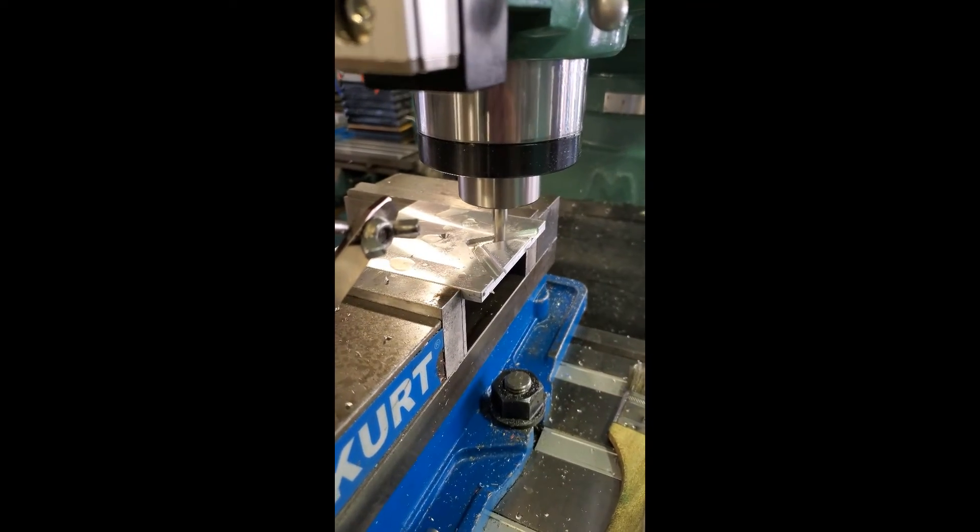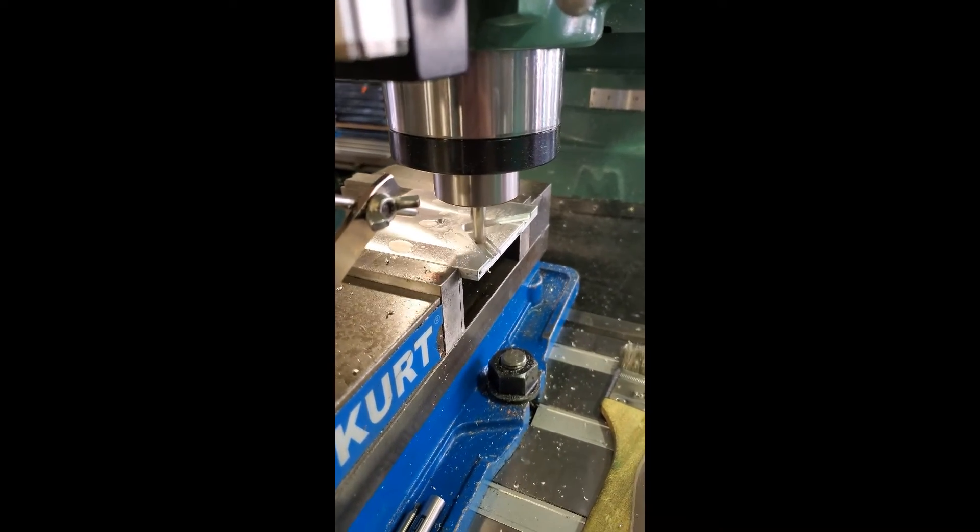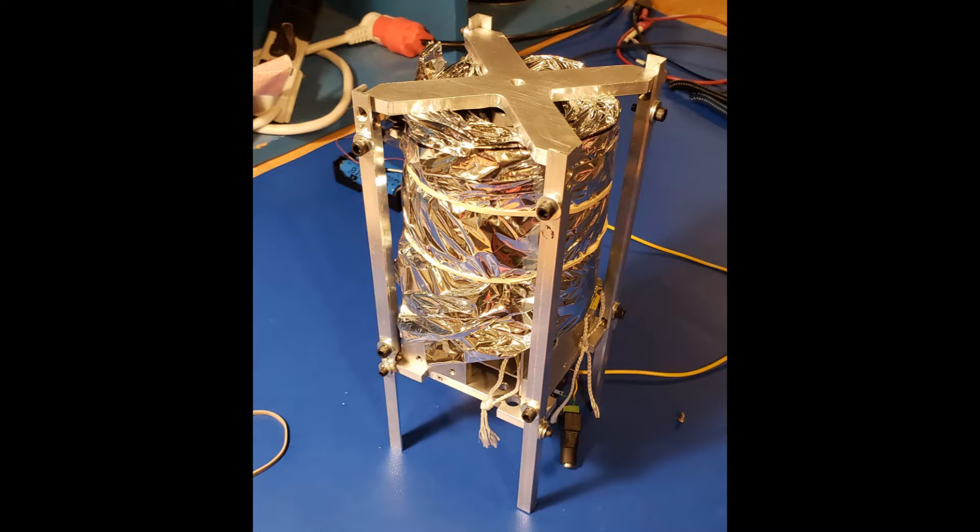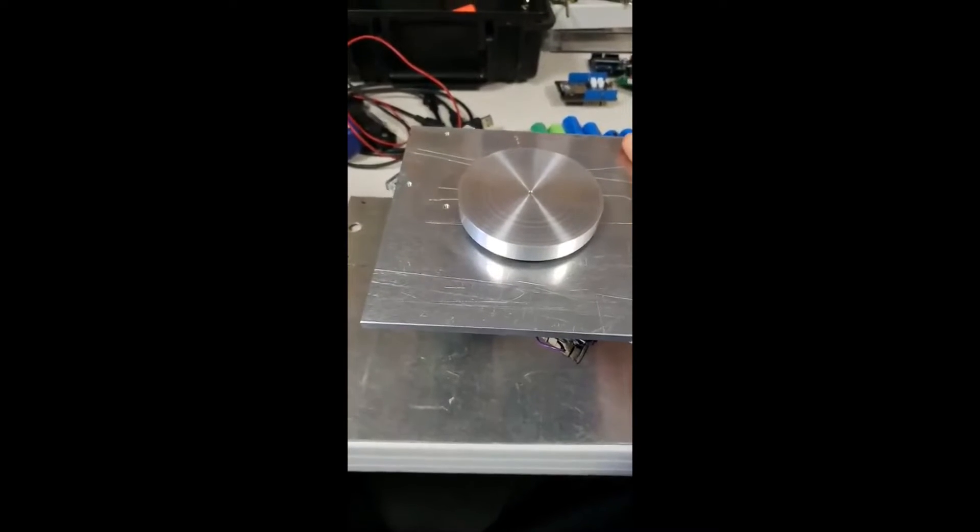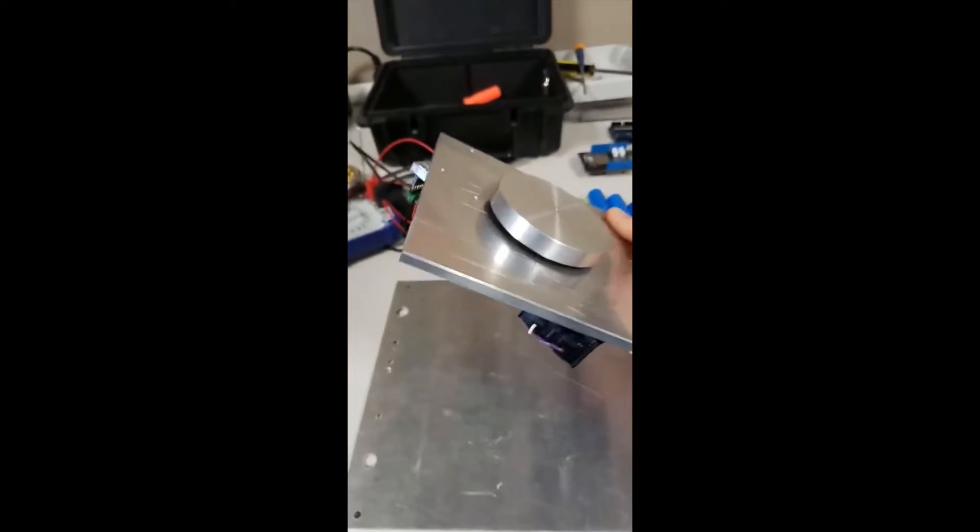To manufacture the CubeSat, we machined the frame using the RIT Kate Gleason College of Engineering machine shop. Unfortunately, the manufacturing for the attitude control system was not completed.